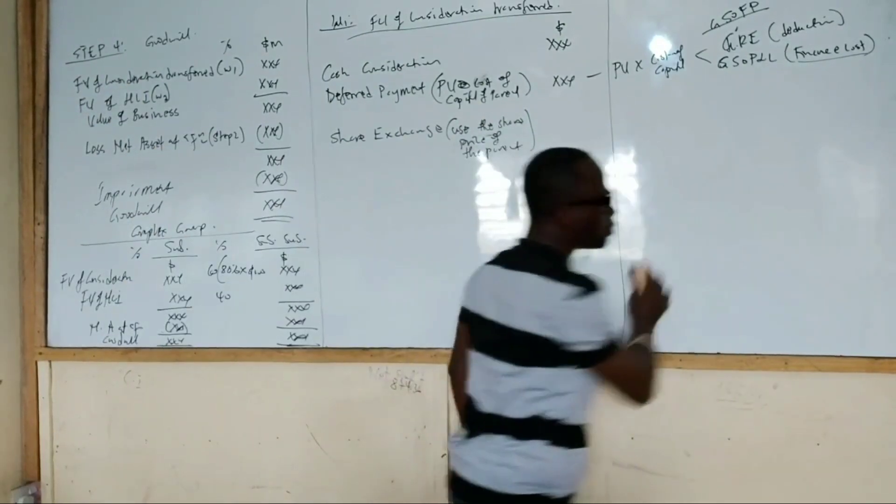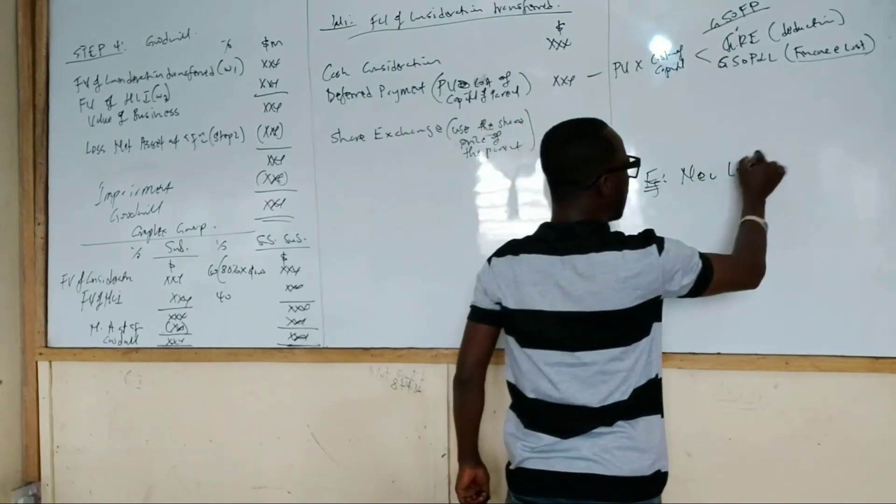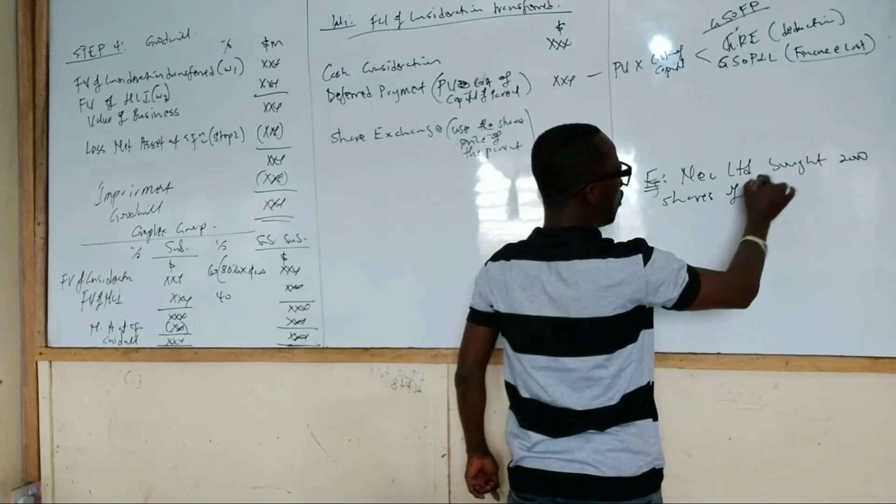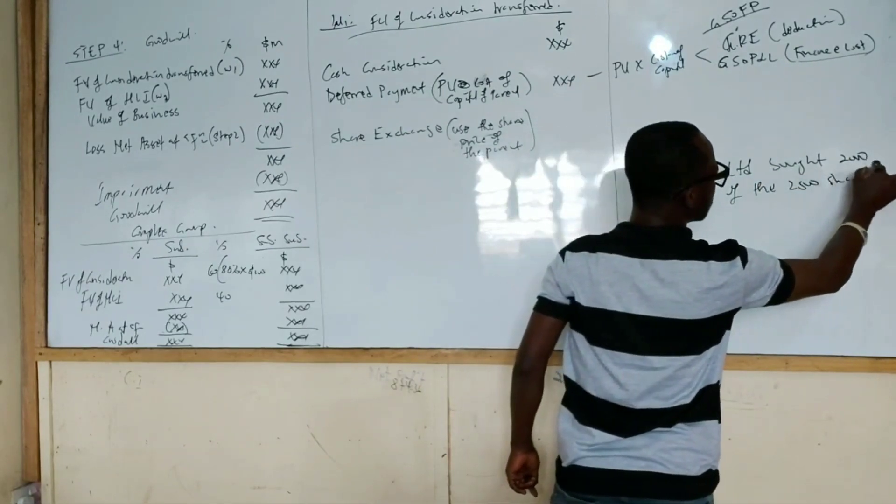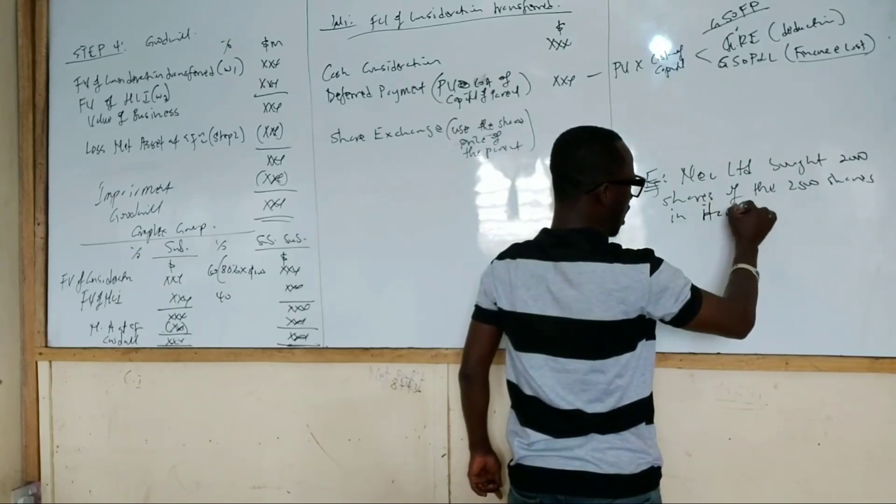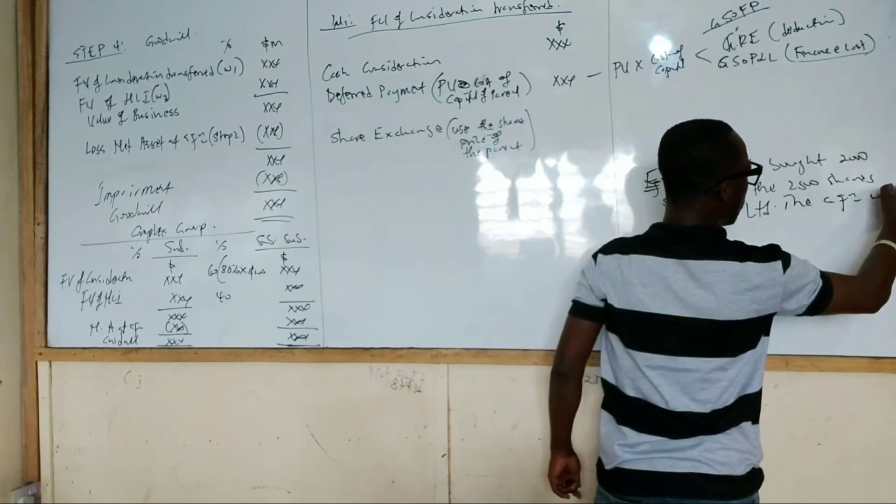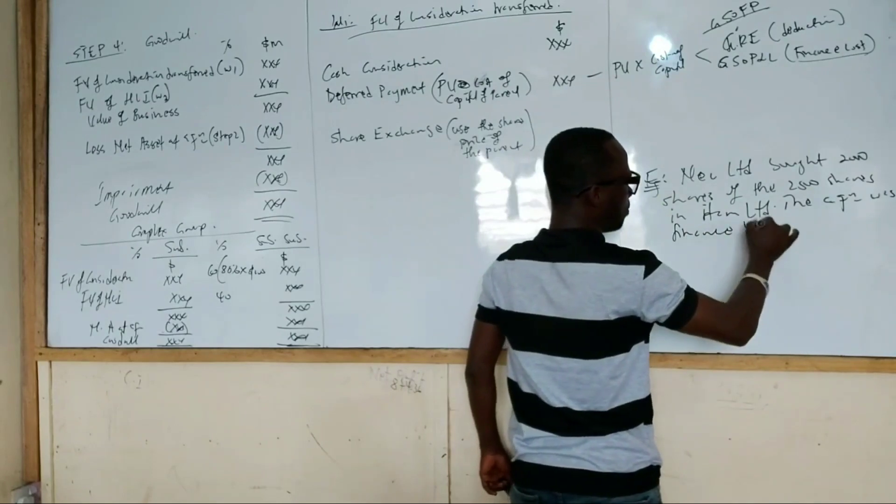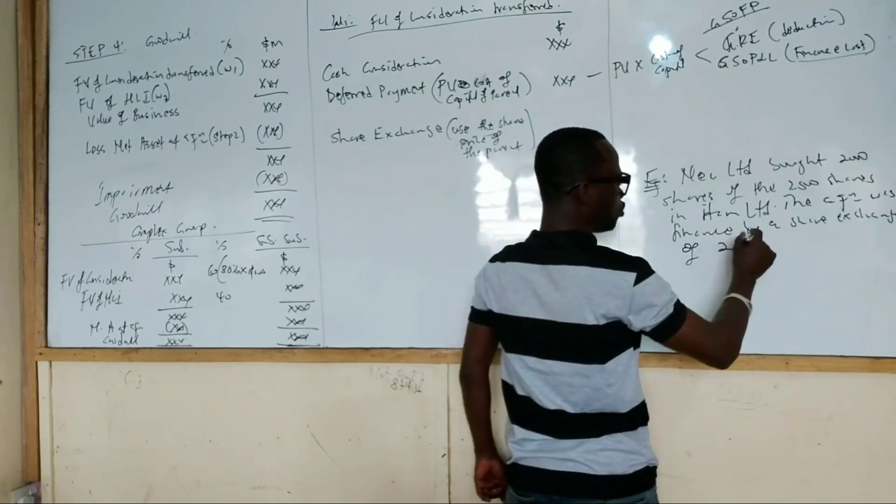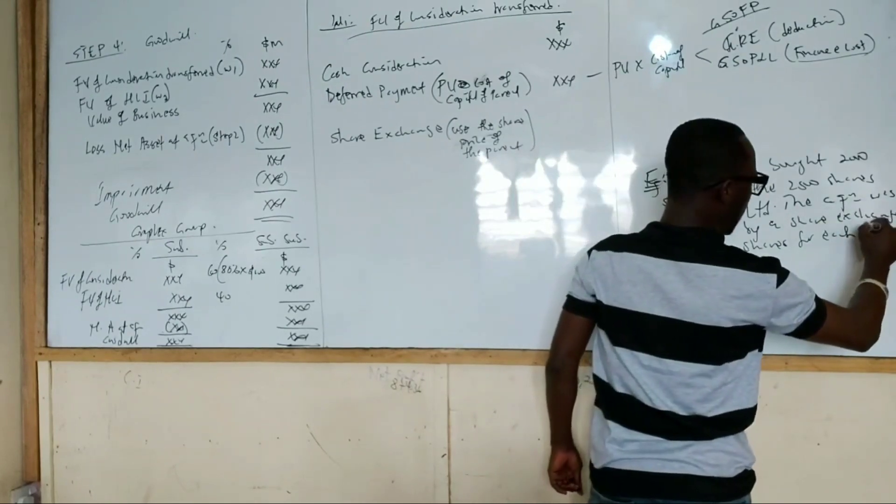So for instance, let's put a scenario up. NEC Limited bought 2,000 shares of the 2,500 shares in HAM Limited. The acquisition was financed by a share exchange of 2 shares for each 5 shares acquired.